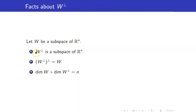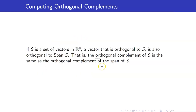Here are some facts about w-perp. First, w-perp is a subspace of Rn. Second, the orthogonal complement of the orthogonal complement of w is w itself. Lastly, since w and w-perp are both subspaces, we can talk about their dimensions, and the sum of their dimensions equals n.